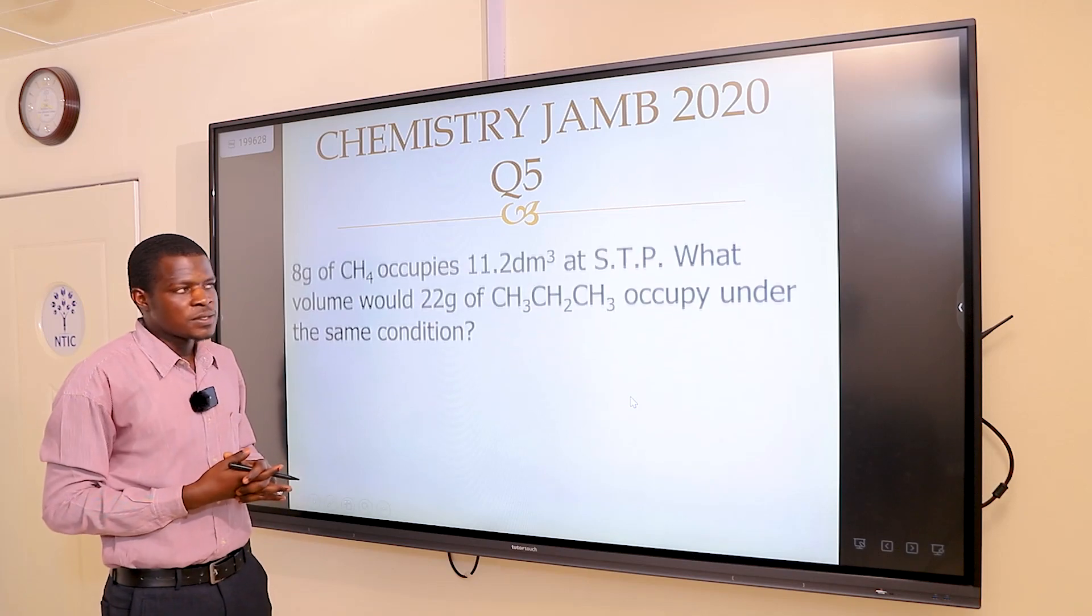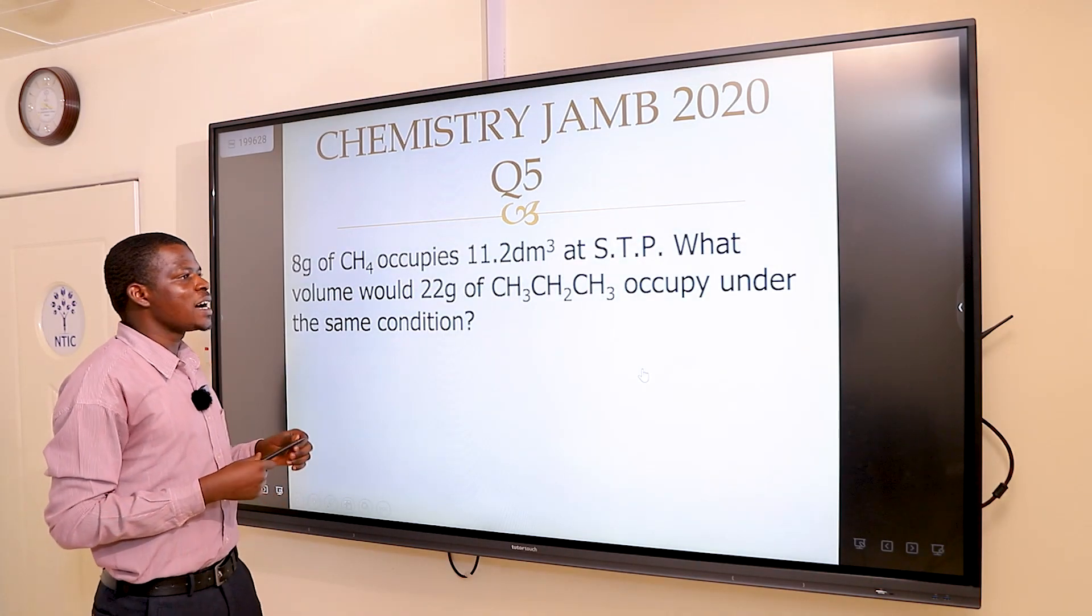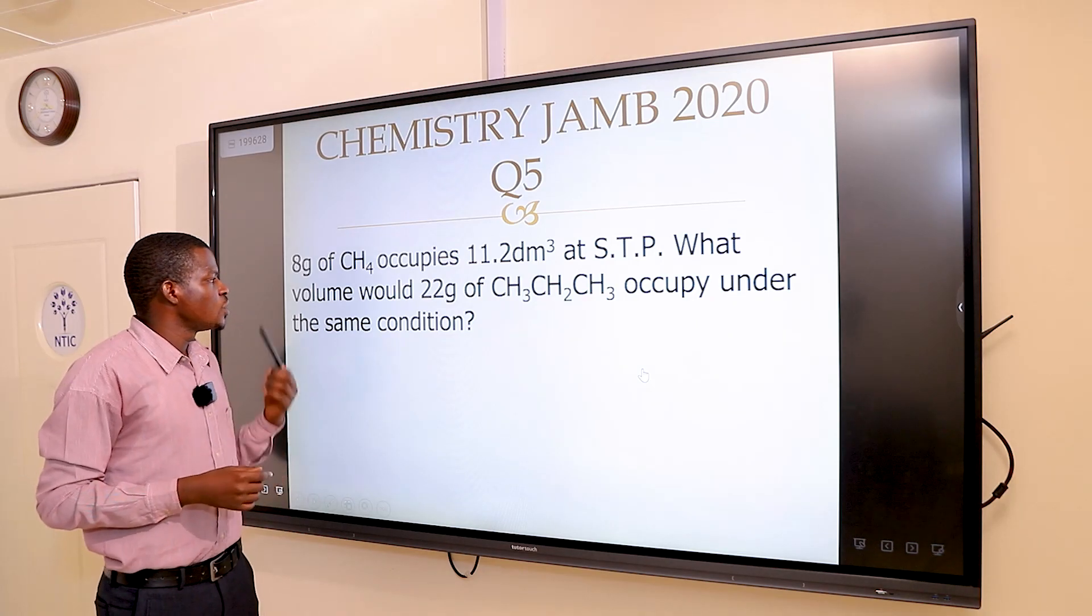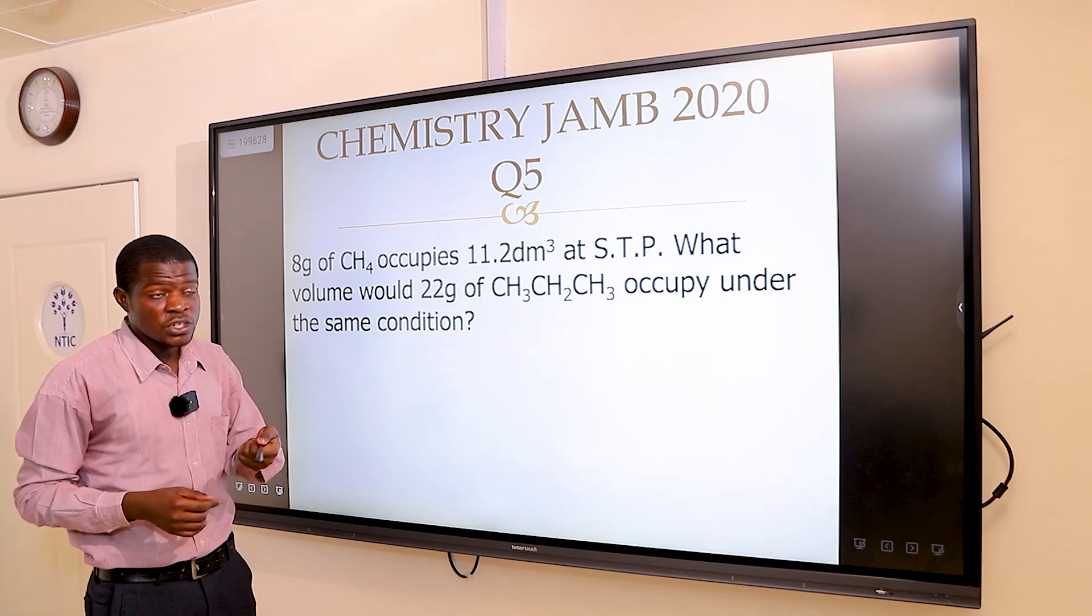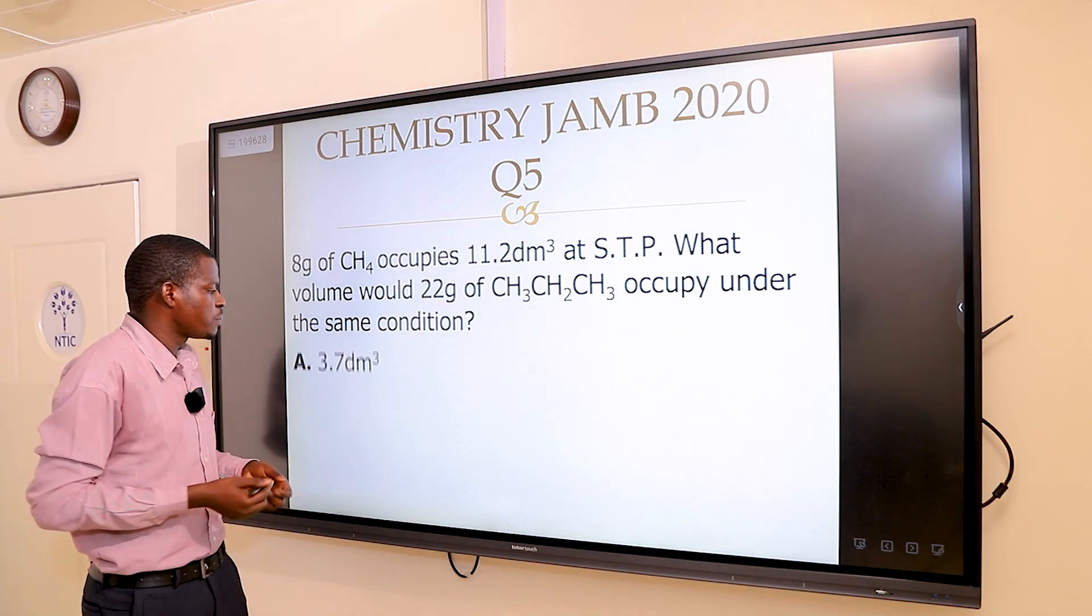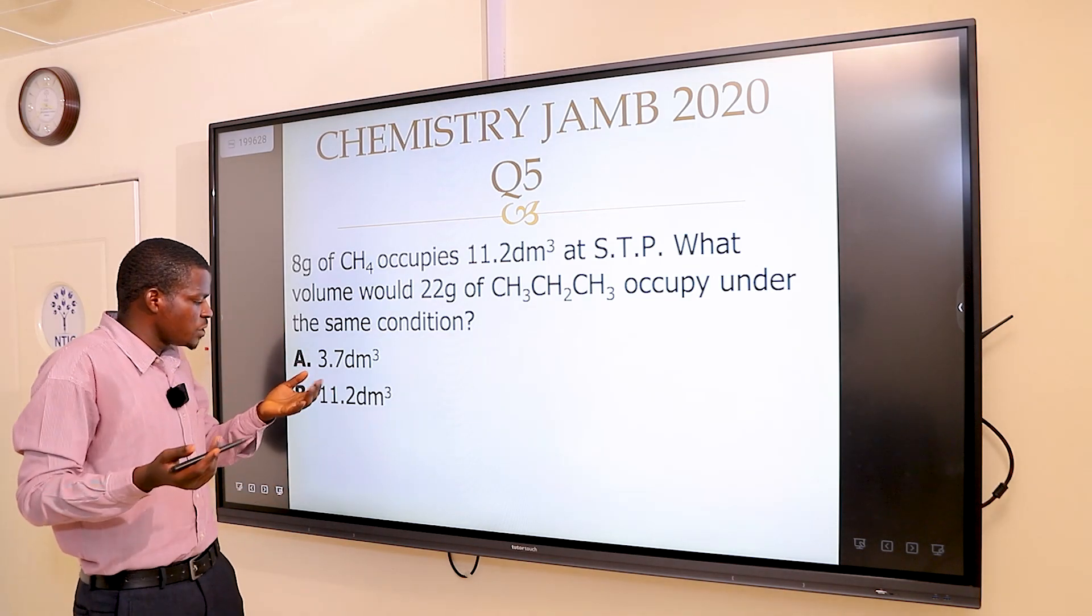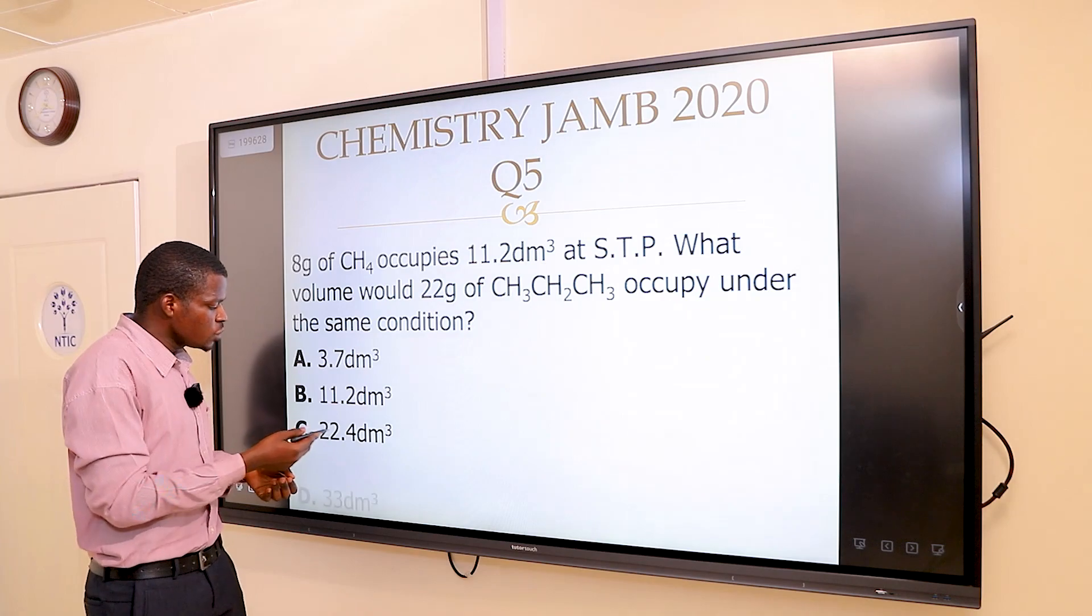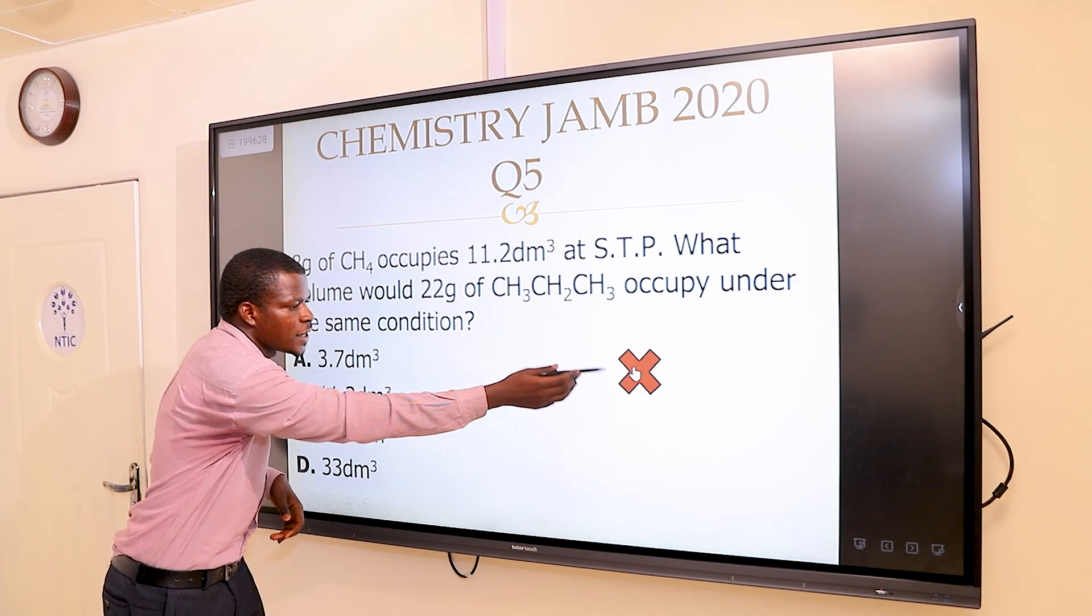Question number five says: 8 grams of methane occupies 11.2 dm³ at standard temperature and pressure. What volume would 22 grams of propane, C3H8, occupy under the same condition? The options were: A, 3.7 dm³; B, 11.2 dm³; C, 22.4 dm³; and D, 33.6 dm³. Option A is wrong.